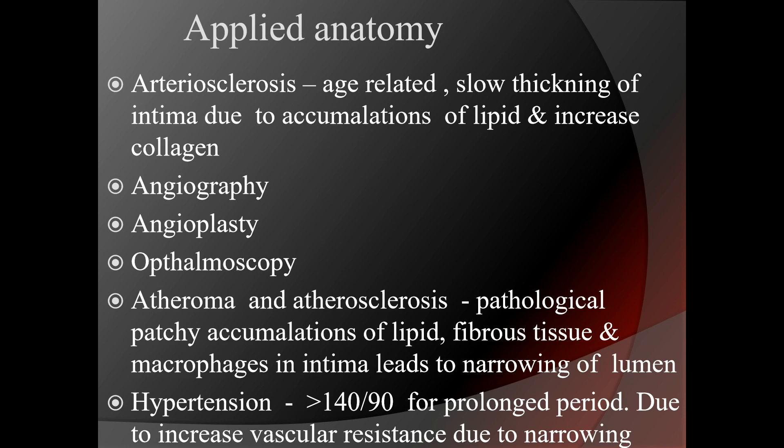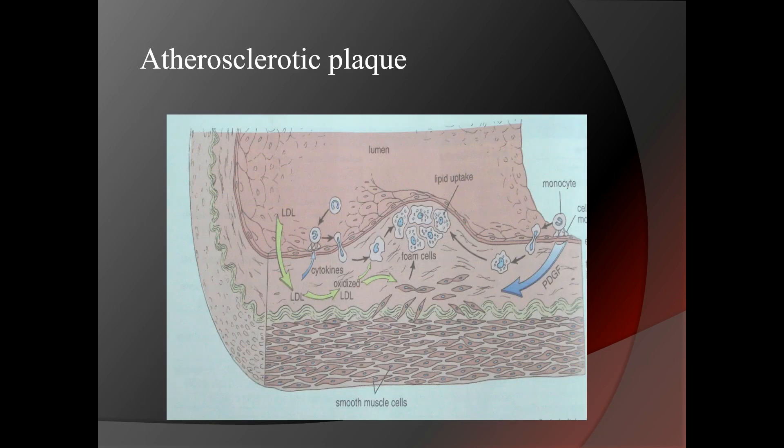Applied aspects: deep vein thrombosis, varicose veins, atherosclerosis — an age-related condition showing slow thickening of intima due to accumulation of lipid and increased collagen. Atheroma involves pathological patchy accumulations of lipid, fibrous tissue, and macrophages in the intima, leading to narrowing of the lumen. Hypertension (>140/90 mmHg for prolonged periods) results in increased vascular resistance due to narrowing of the lumen. Investigations include angiography, angioplasty, and ophthalmoscopy. An image of atherosclerotic plaque formation was shown. Thank you.